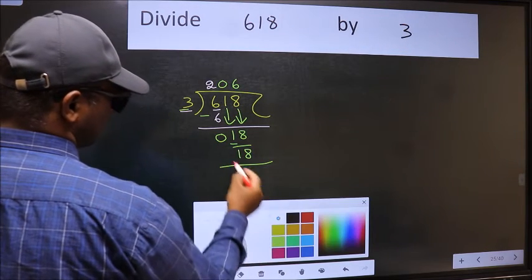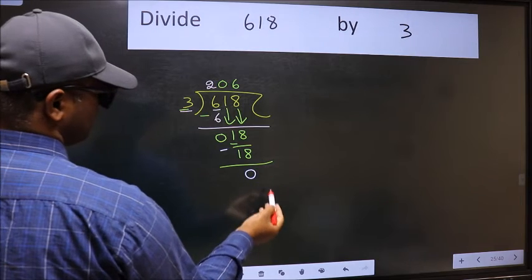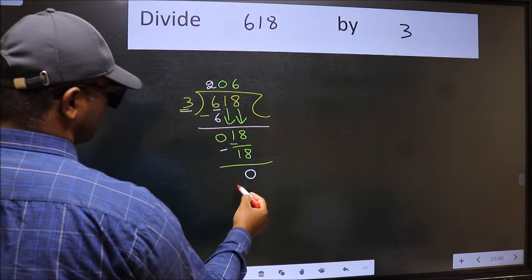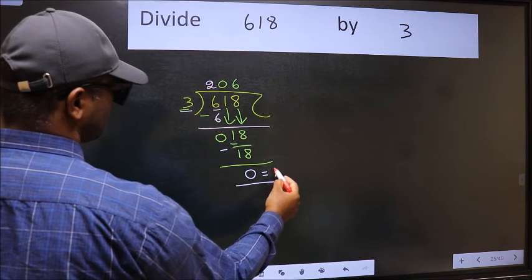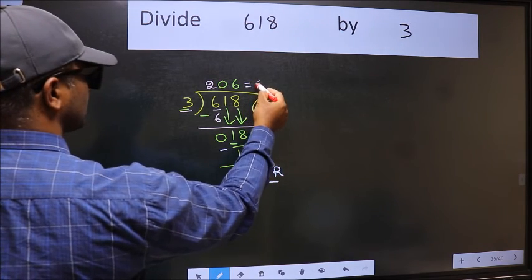Now we should subtract. We get 0. No more numbers to bring down, so we stop here. This is our remainder and this is our quotient.